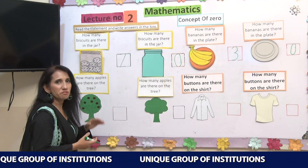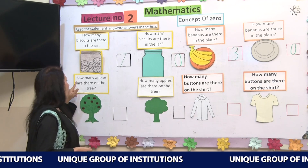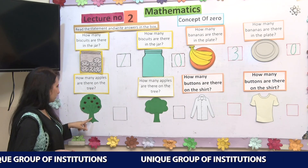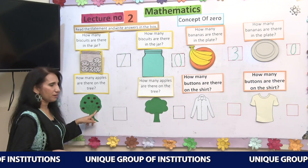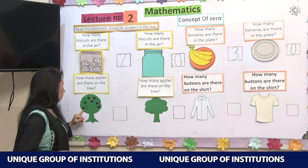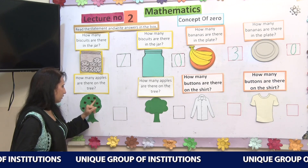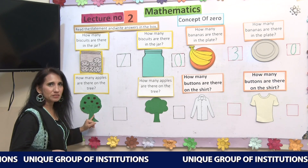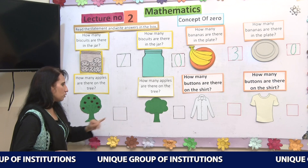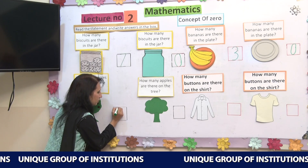Let's move here. The caption is: how many apples are there on the tree? You can see a tree here with some apples. Let's count: 1, 2, 3, 4, 5, 6, 7. There are 7 apples on this tree, so I will write number 7 in this box.